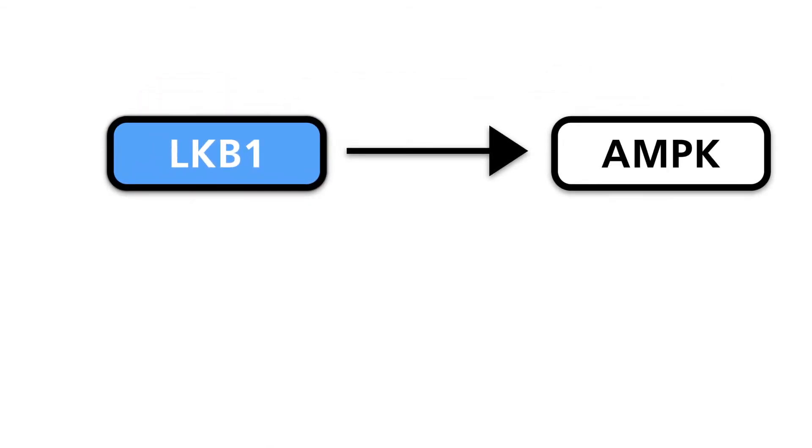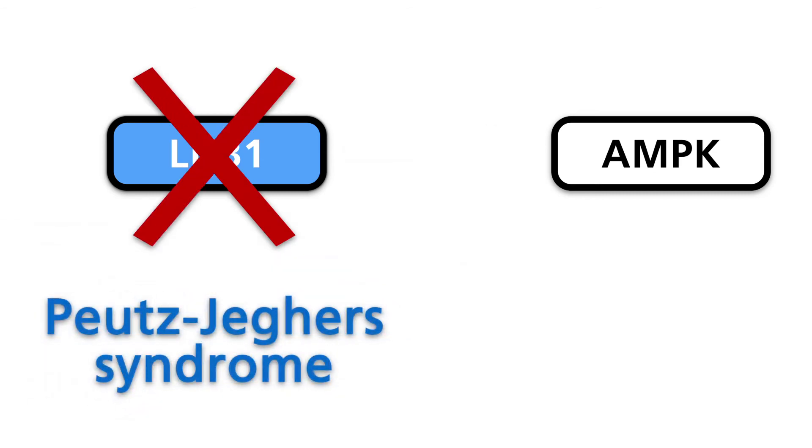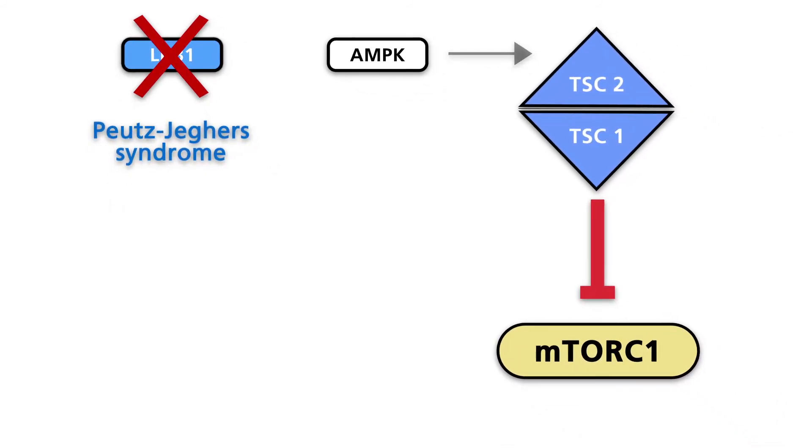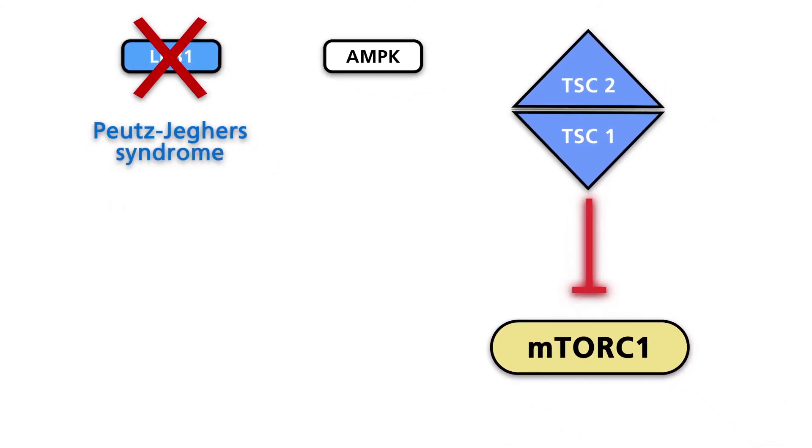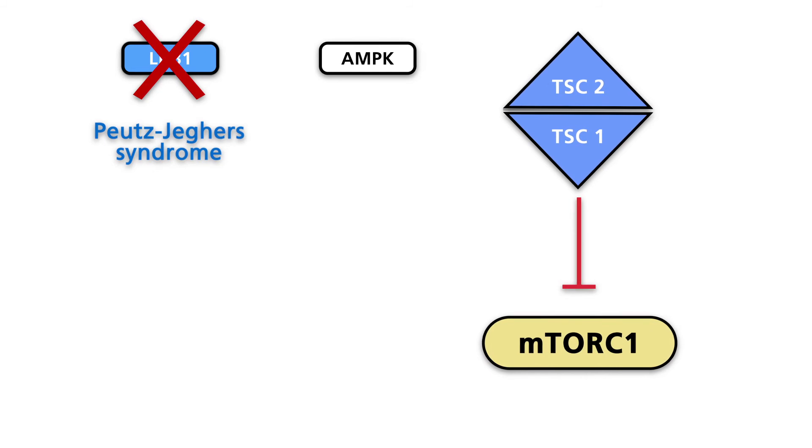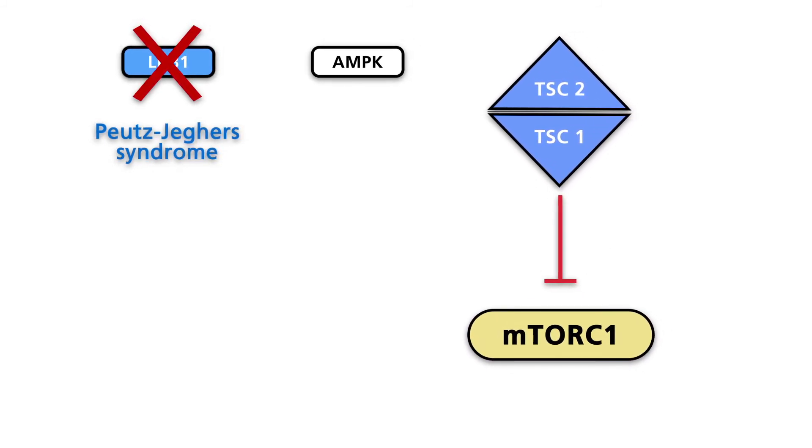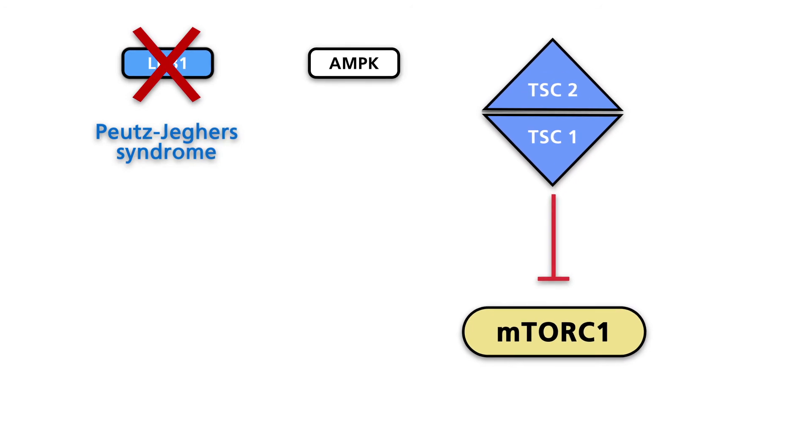In Peutz-Jeghers syndrome, the LKB1 gene is inactivated. This syndrome is characterized by multiple tumor-like lesions, called hamartomas, in the gastrointestinal tract. The loss of LKB1 activity reverses the inhibitory action of the TSC1-TSC2 complex on the activity of mTOR complex 1.